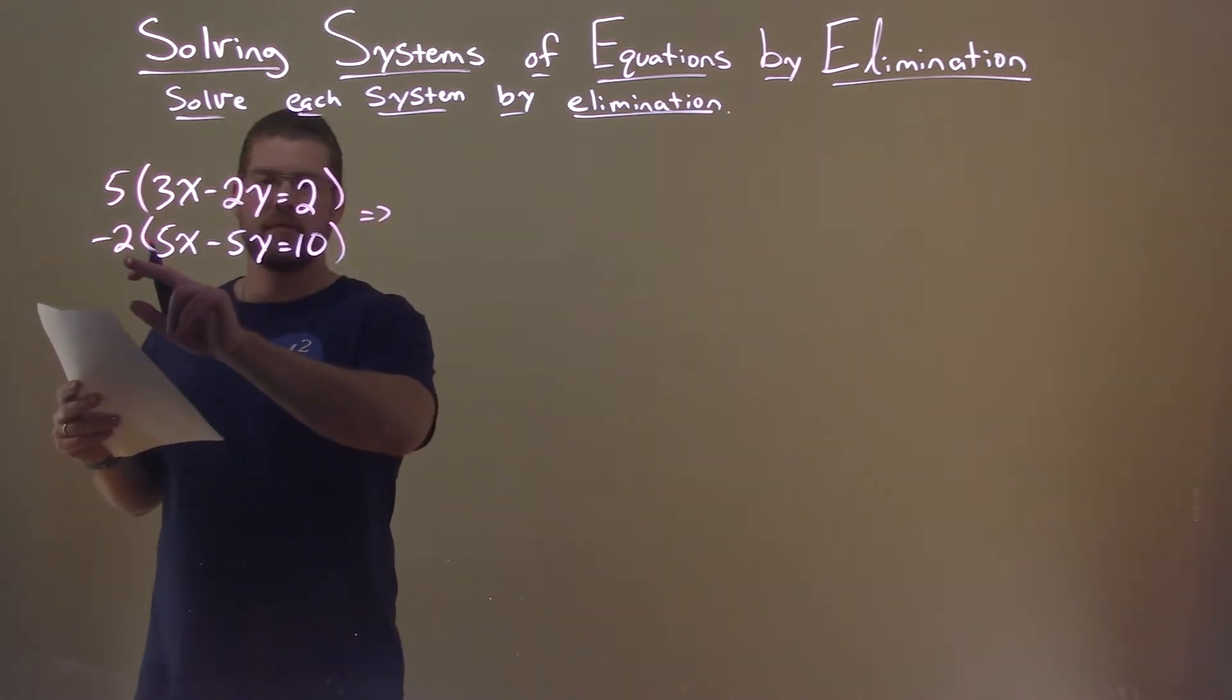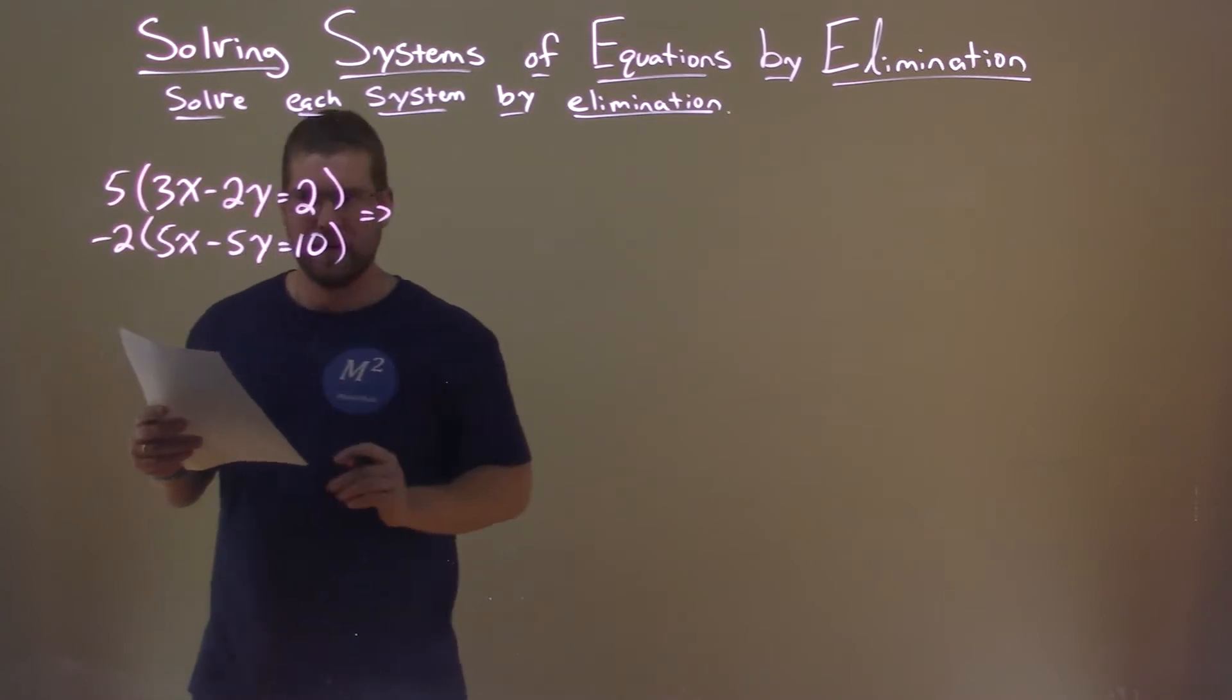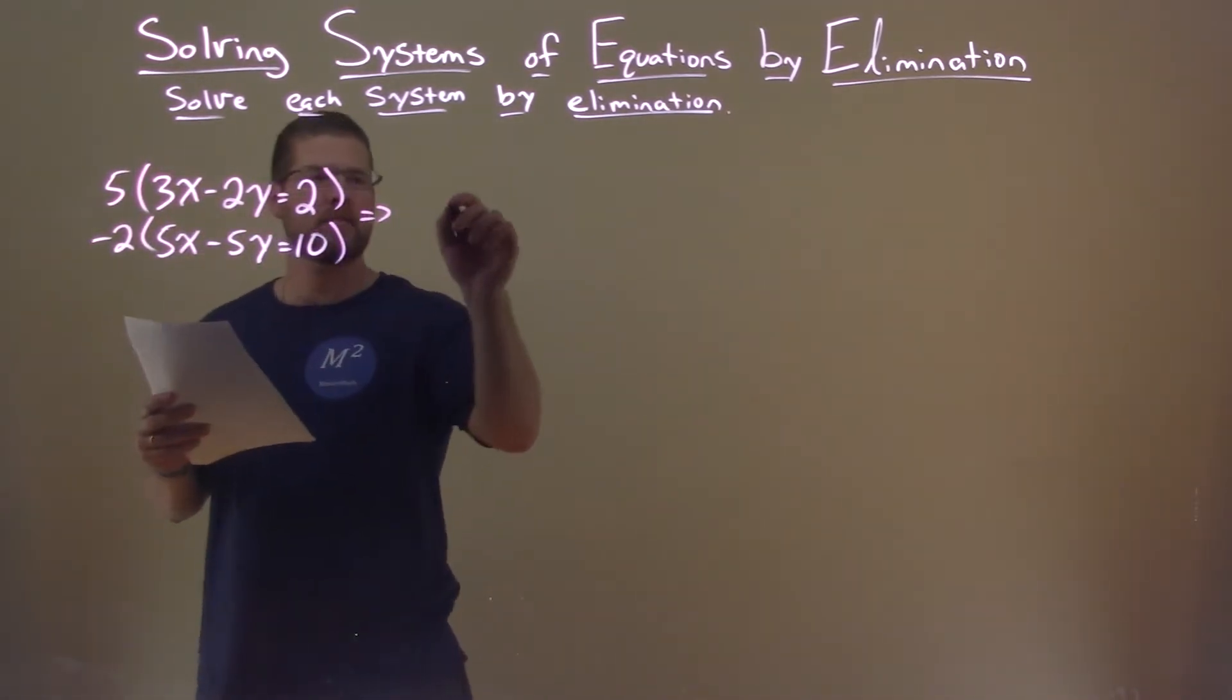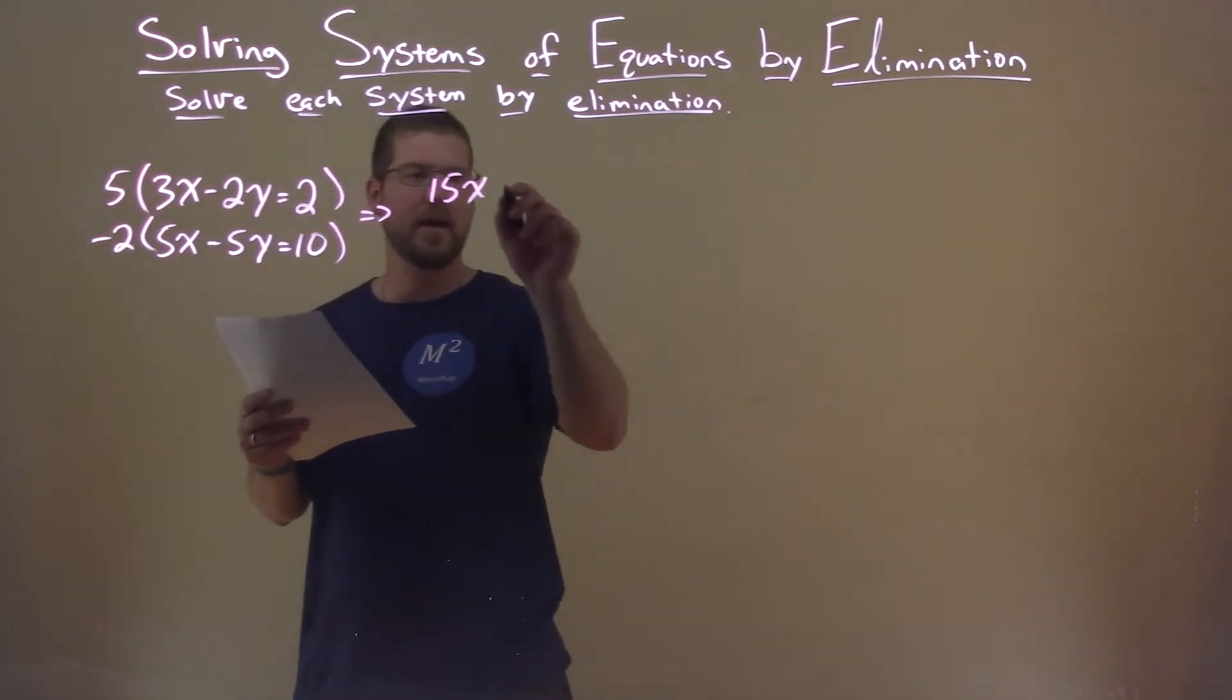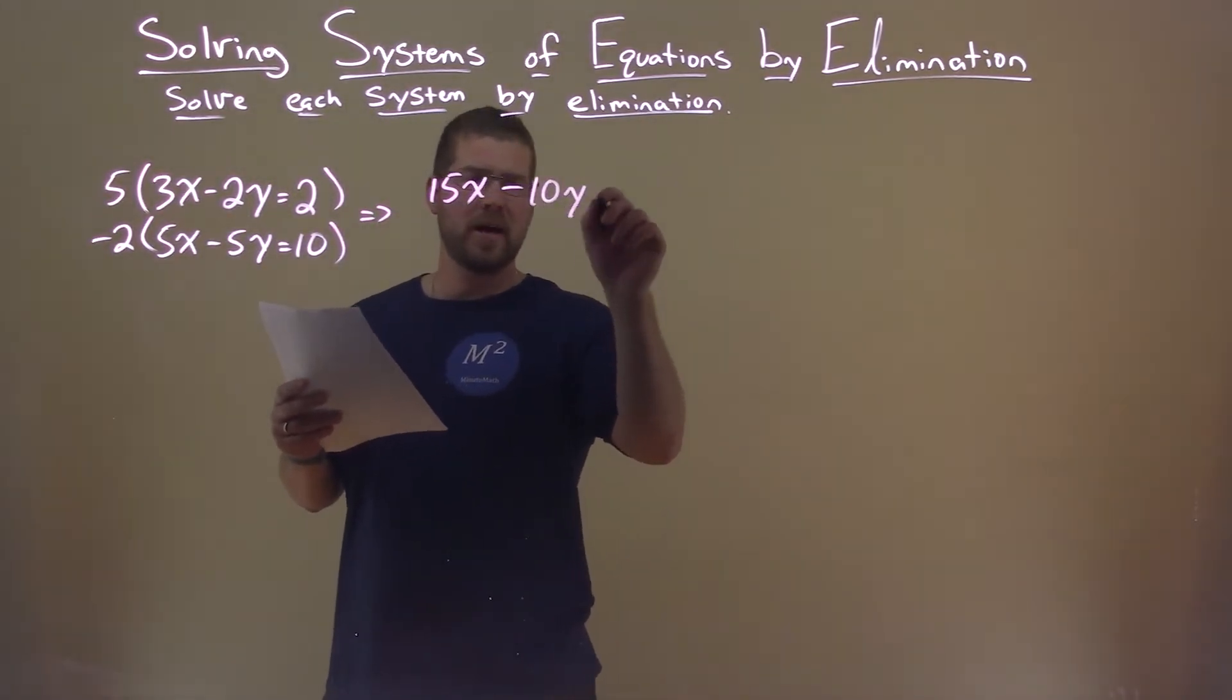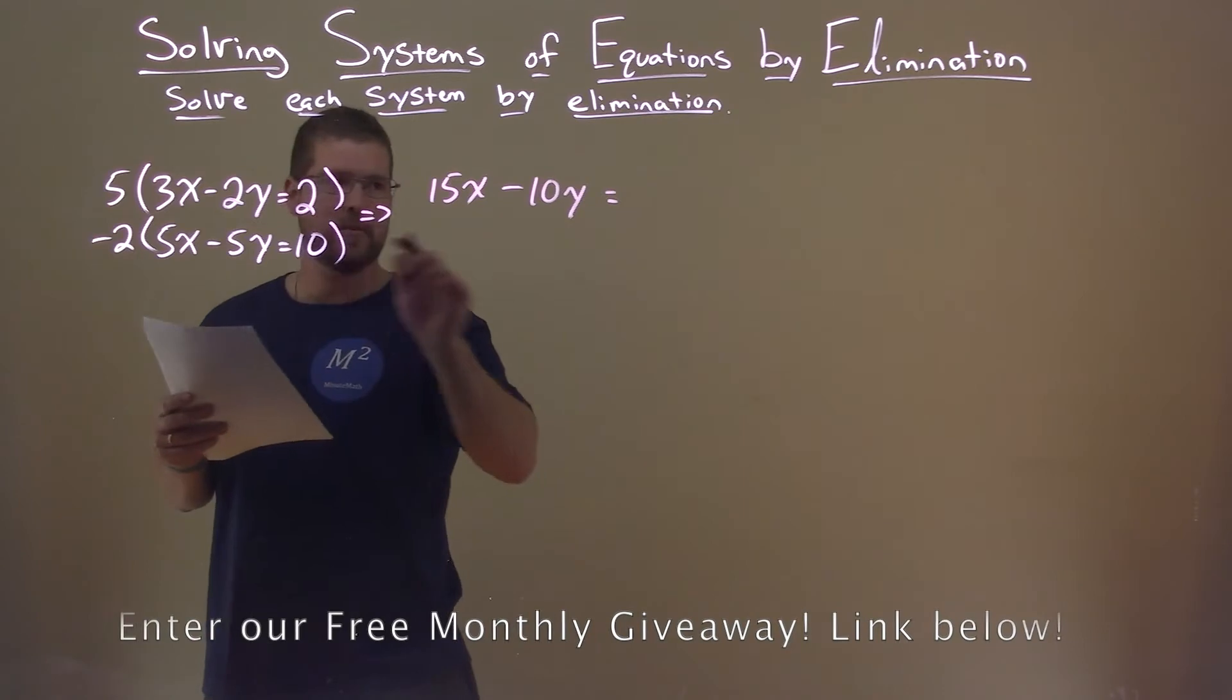Notice the negative 2, I want this to be a positive 10y here so we can add it easily. 5 times 3x is 15x. 5 times negative 2y is minus 10y here, and 5 times 2 is 10.